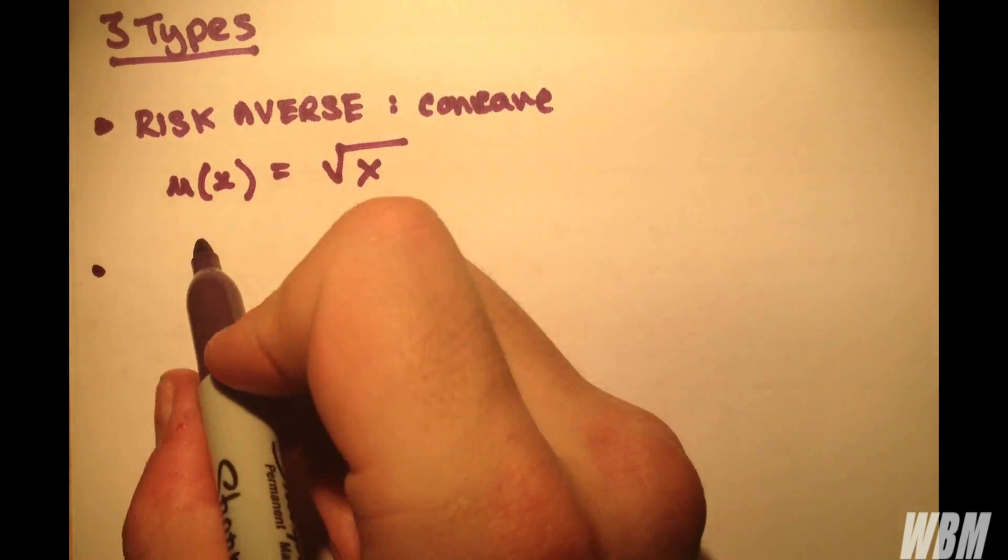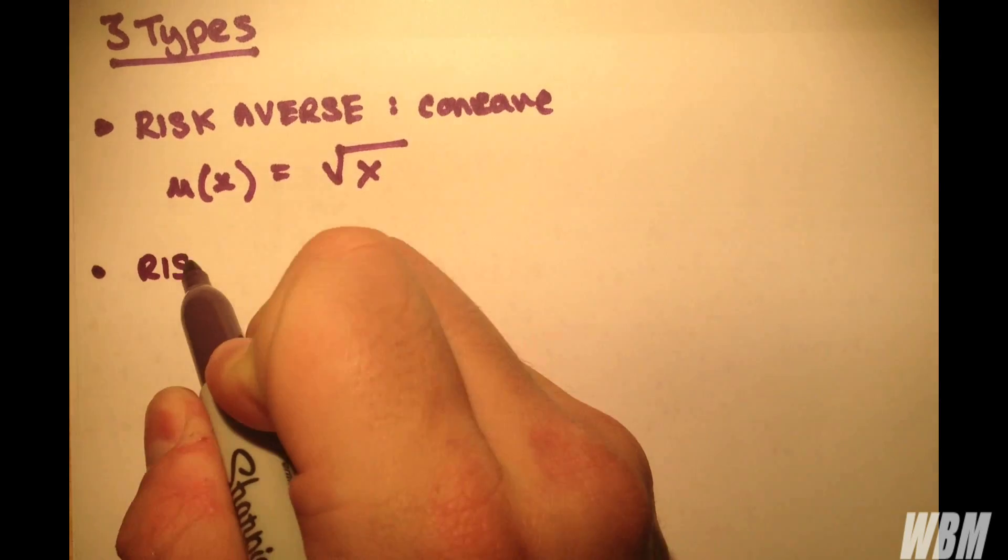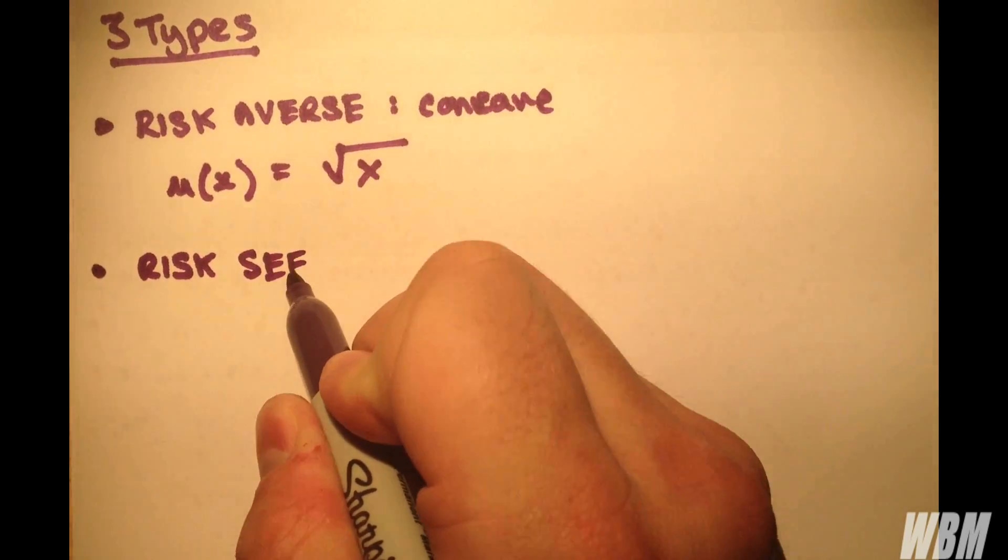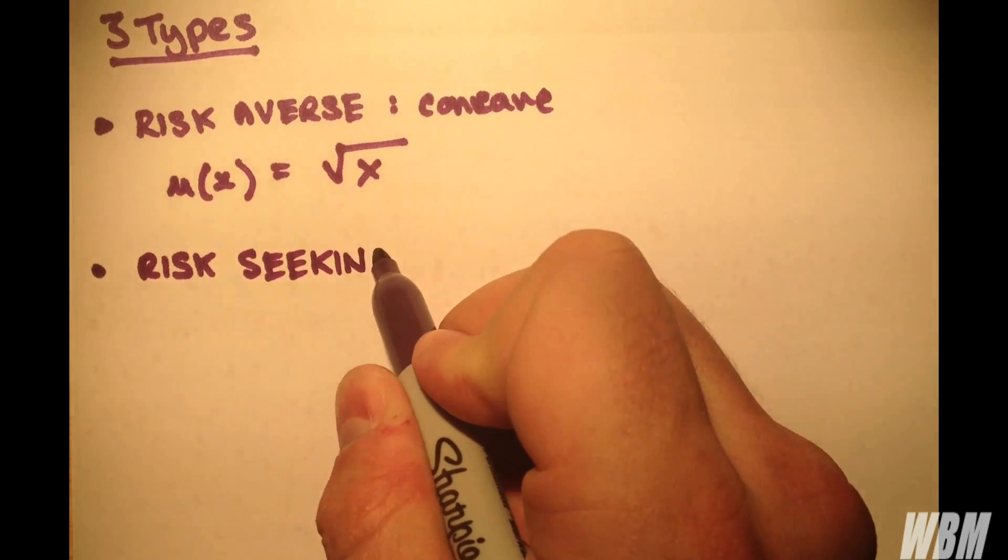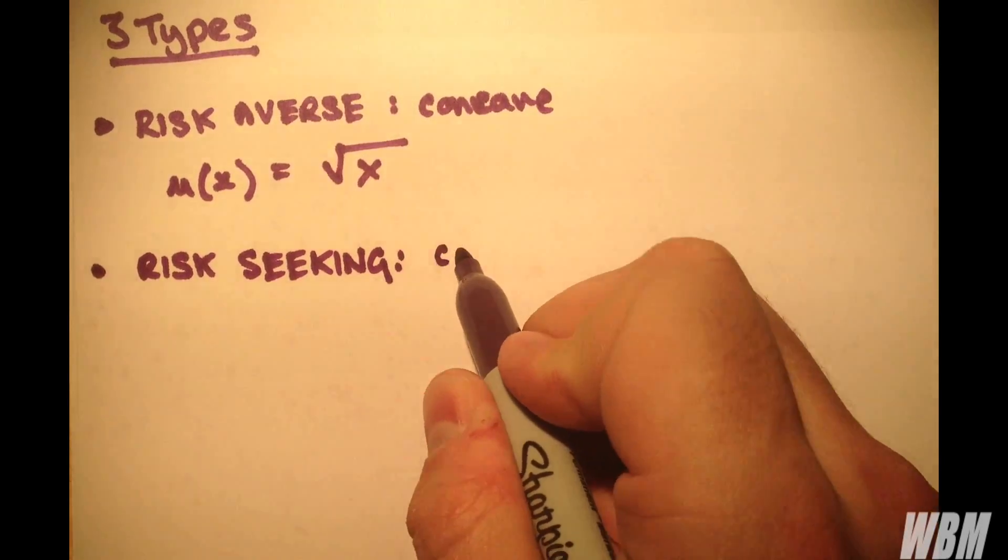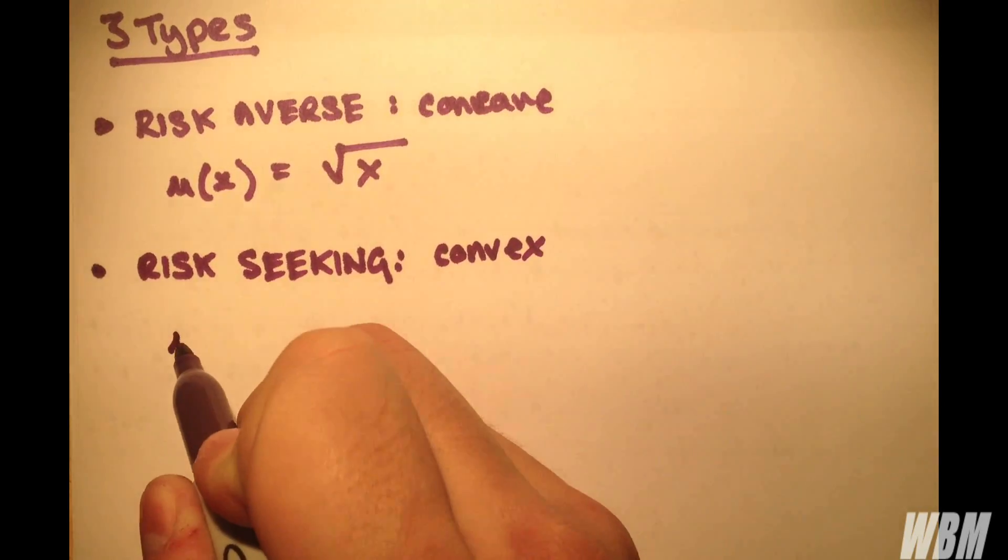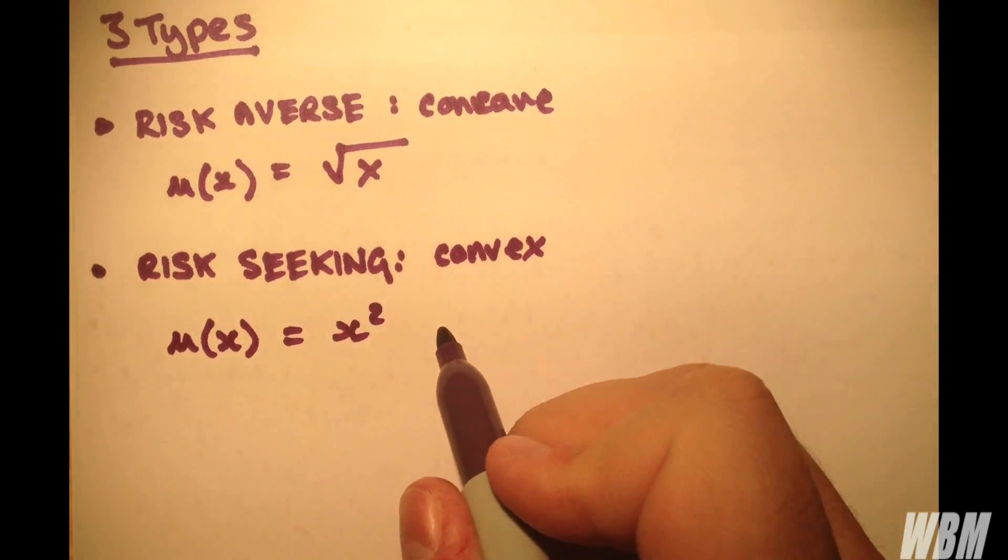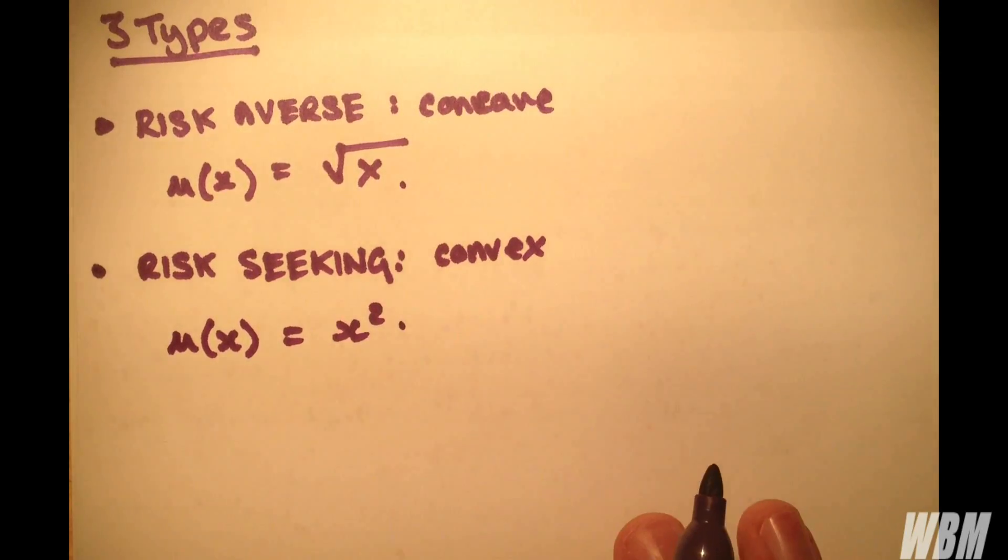Another type is risk-seeking. So if you're the type of person who enjoys taking a gamble, being risky, these tend to be convex. Now a good example of this is x squared, if you can see where we're going here.